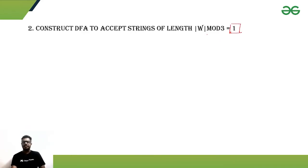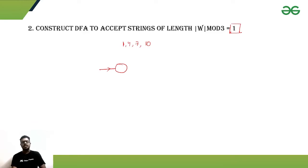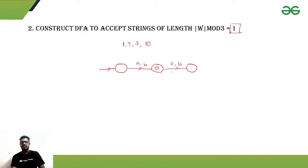Our next question is similar, but with a remainder of 1. The length of the string should be 1, 4, 7, 10, and so on. The zero-length (null) string won't be accepted. By getting a single symbol the string is accepted. Getting another symbol moves to a length-2 string, which won't be accepted. Another symbol gives length 3, also not accepted.